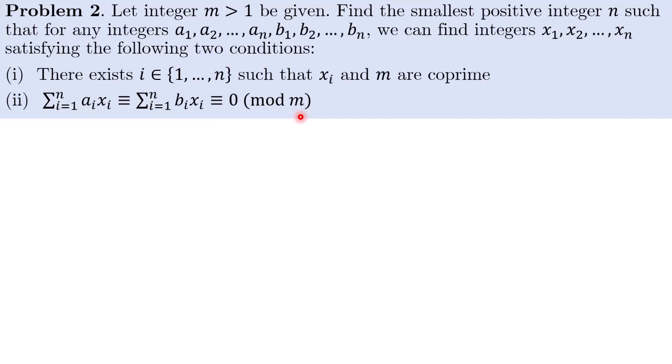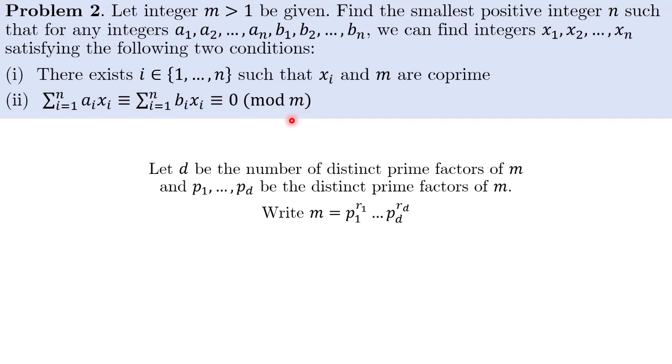So to begin this problem, I will set up some notation. Firstly, let d be the number of distinct prime factors of m and we write all the prime factors of m as p1 to pd. So we can write m in this fashion. It's useful to consider the distinct prime factors because then basically condition 2 is the same as saying that sum of aixi and sum of bixi are divisible by pj to the power rj for every j.